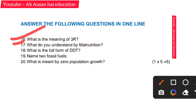Next question: what do you understand by malnutrition? Malnutrition is a serious situation when your diet doesn't have the right amount of nutrition.